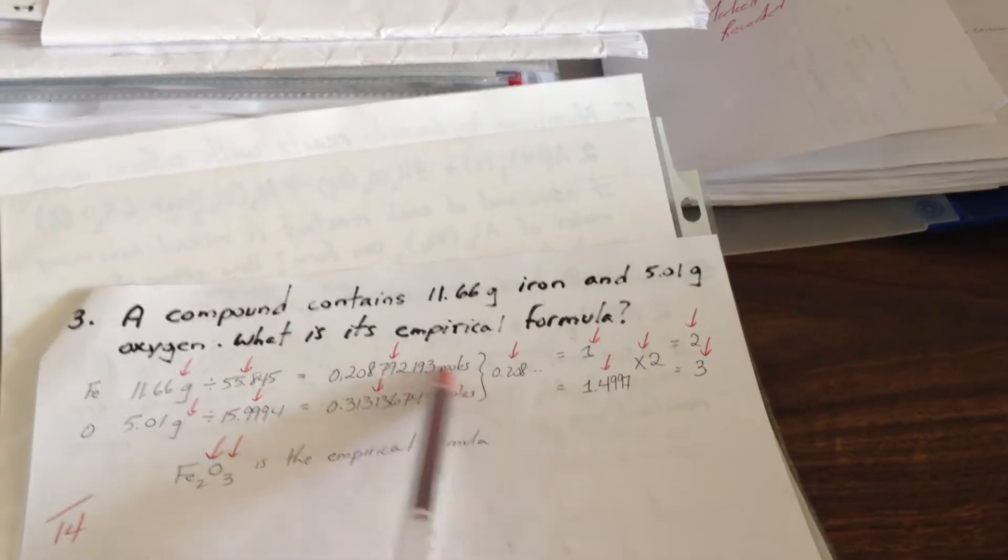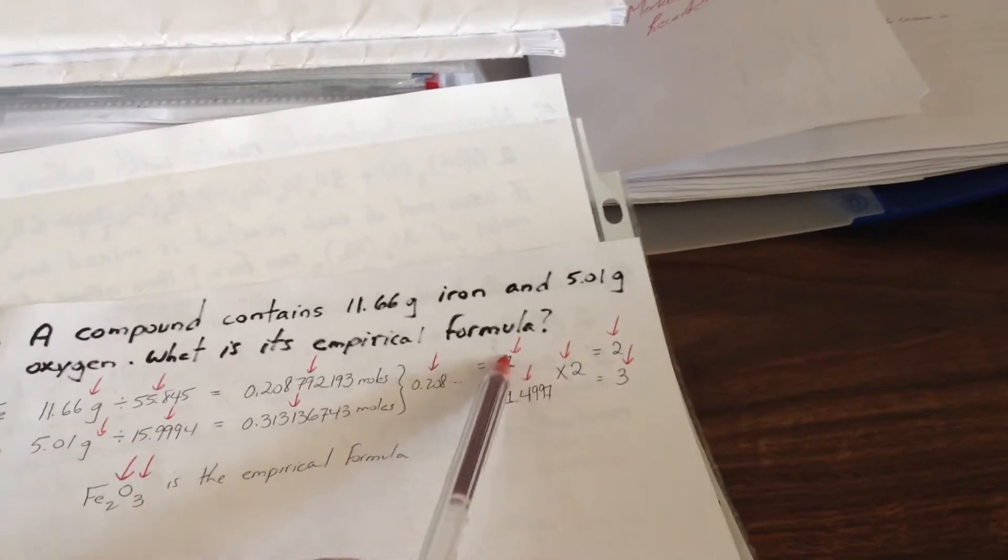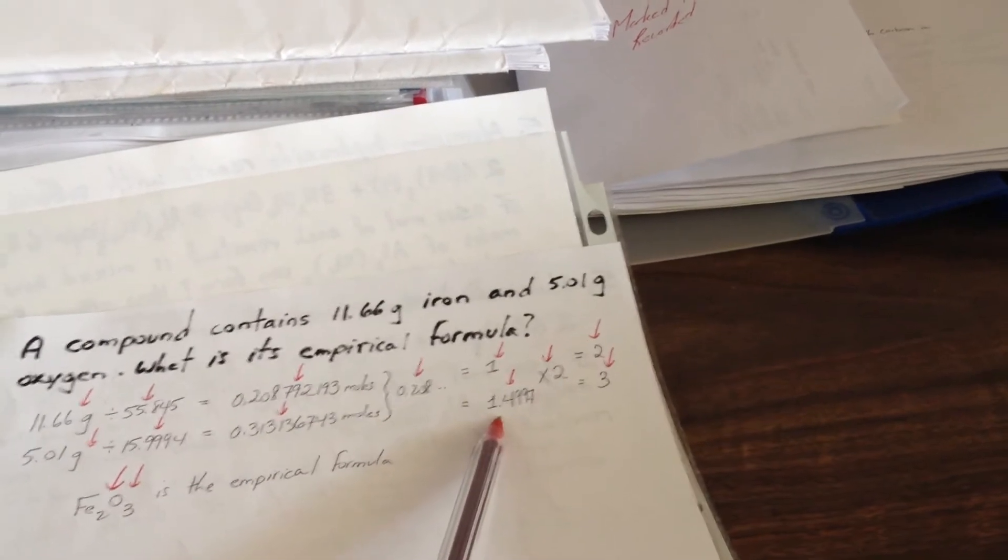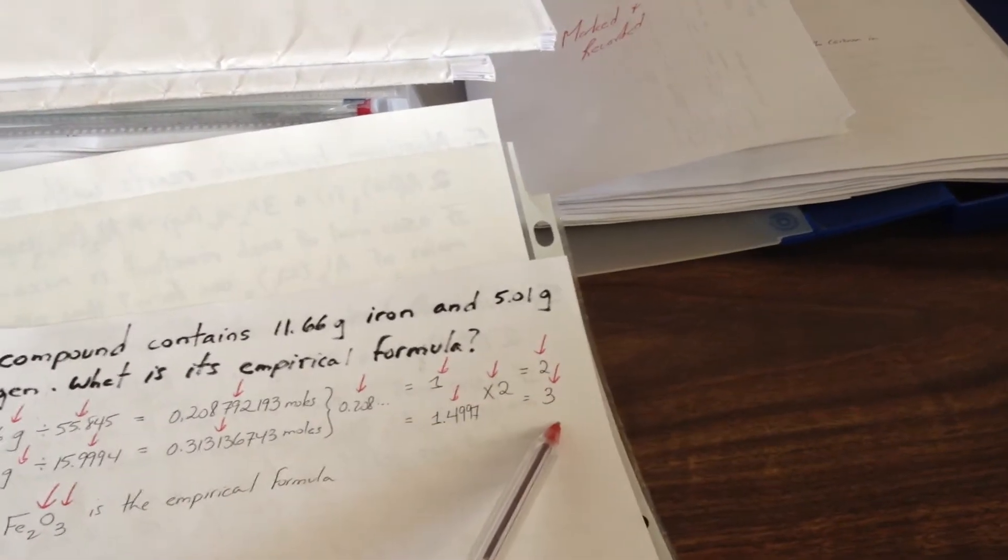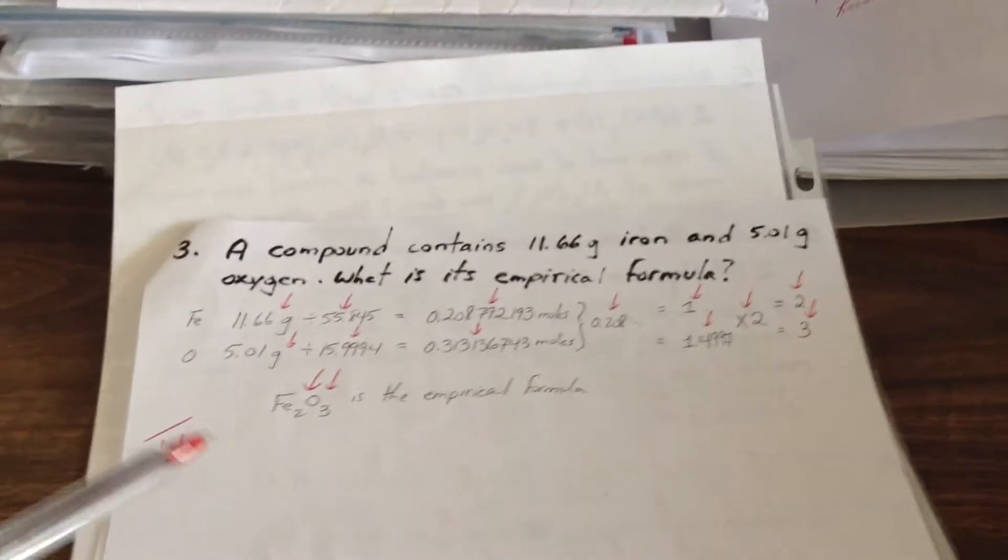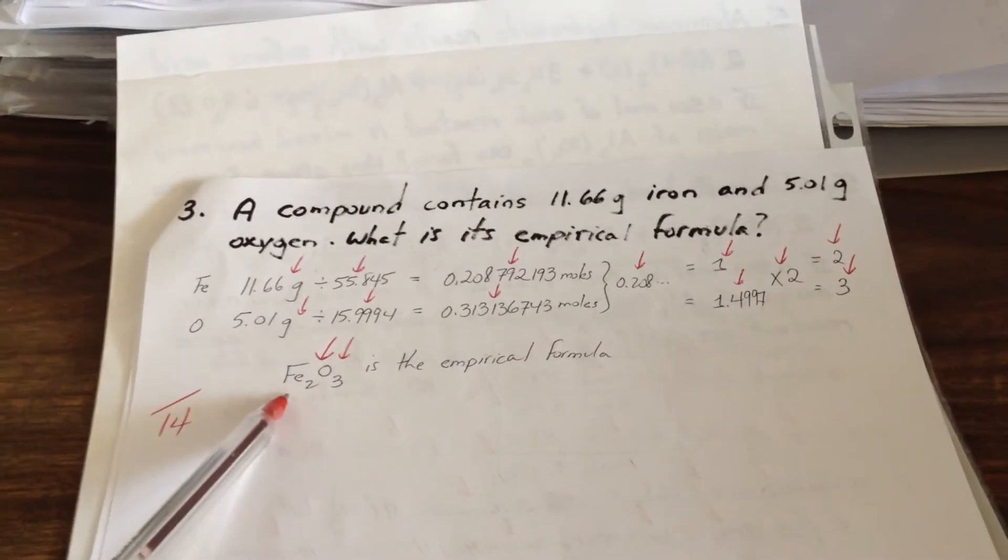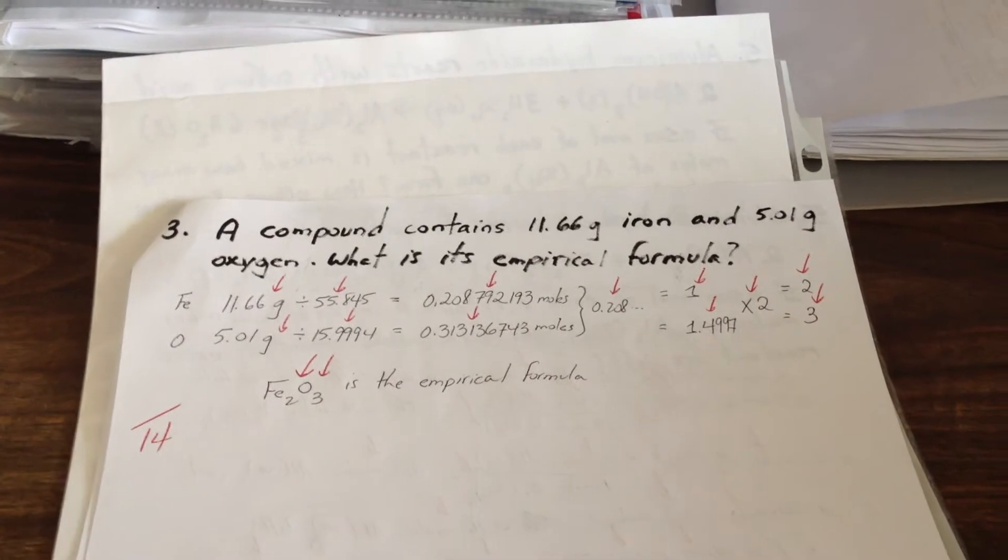We divide by the lowest number of the two. And it gives us a ratio of 1 and roughly 1.5. So we multiply everything by 2 and it gives us a whole number ratio of 2 to 3. So the empirical formula for this substance is Fe2O3. Fourteen marks for that question.